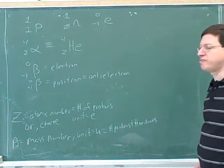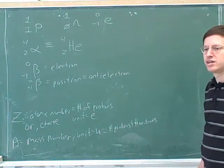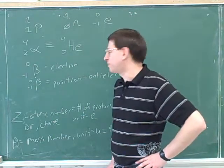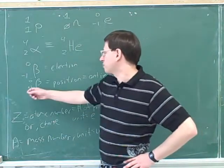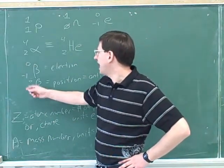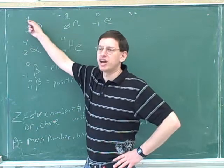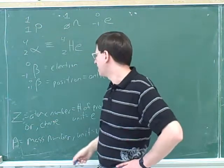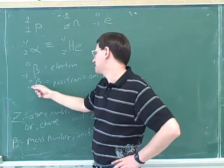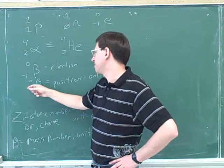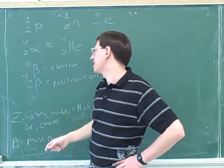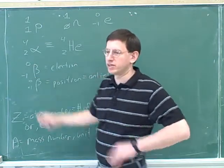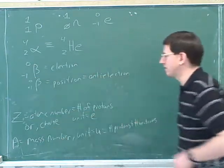Notice that the mass of a positron is zero — don't confuse it with a proton. A proton has a mass of 1 and a charge of +1. A positron has a charge of +1 but almost no mass. It's not literally zero, but it's so small we can ignore it, just like the electron.